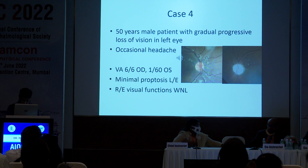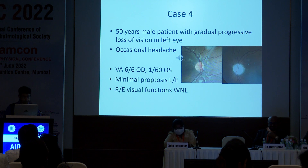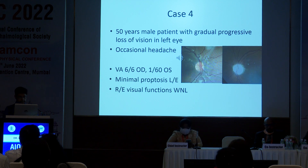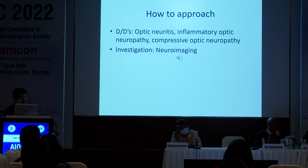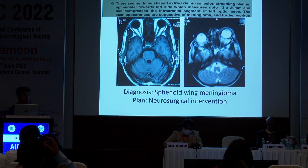A 50-year-old male patient with occasional headaches having a gradual progressive loss of vision in the left eye presented with minimal proptosis. All visual functions in the right eye were normal. You can notice there is a secondary optic atrophy in the left eye optic disc. The differential diagnosis could be optic neuritis, an inflammatory optic neuropathy, or a compressive optic neuropathy. Neuroimaging reveals a sphenoid wing meningioma, which would require neurosurgical intervention — so there was a compressive optic neuropathy going on to secondary optic atrophy.